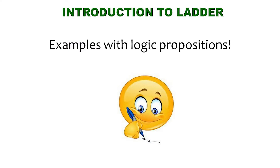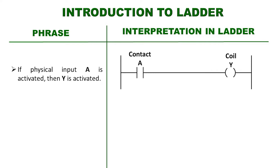To better understand all this, let's see some examples with logical sentences or propositions. The sentence might say: if physical input A turns on, then Y turns on. This could be represented in the ladder diagram with a normally open contact A and a Y coil, and would be interpreted as follows: if contact A receives a logic one, then this contact changes state — that is, it closes — and thus can activate coil Y.